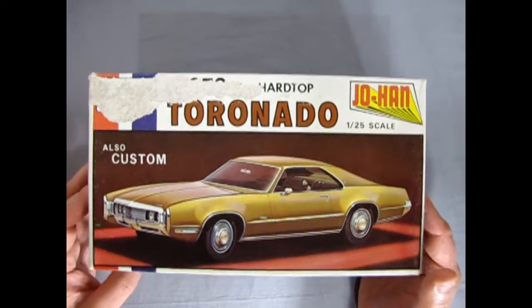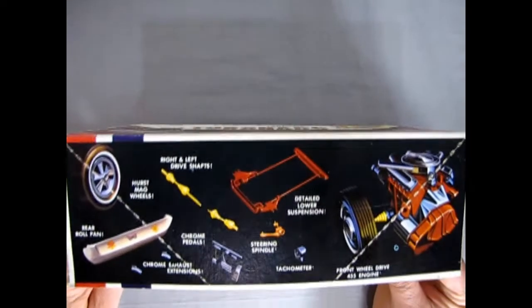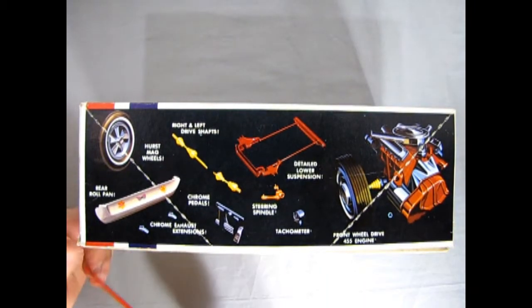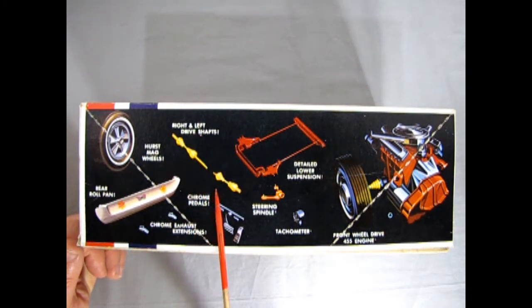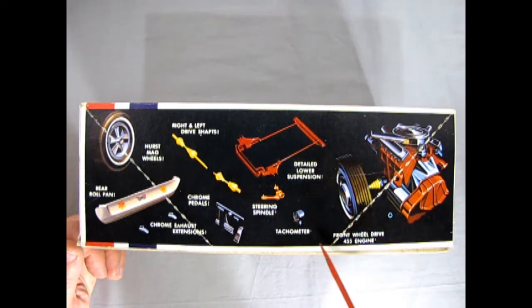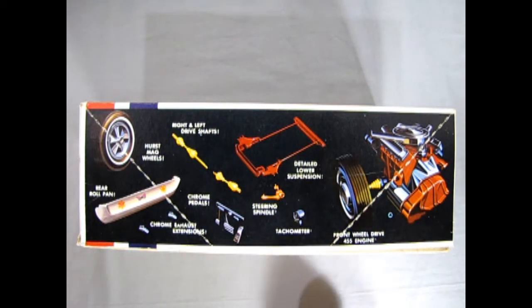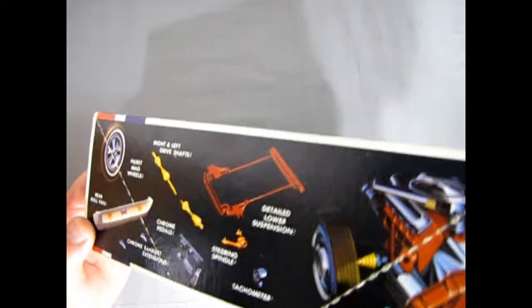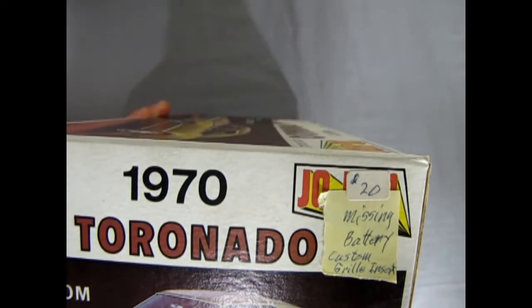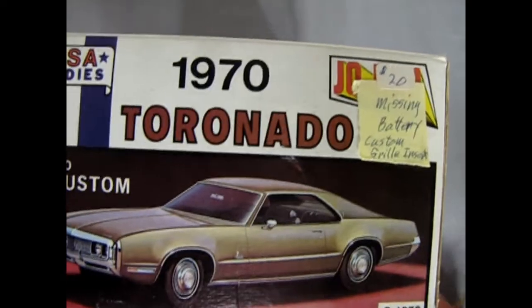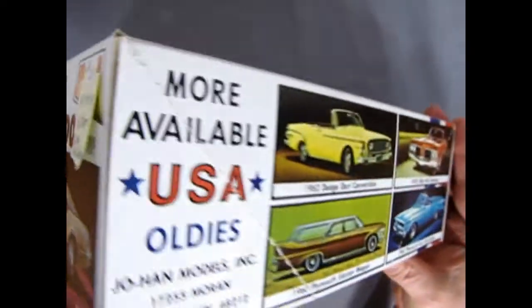Turning it up here we can see all the groovy details: we have Hurst mag wheels in here, a rear rolled pan, chrome exhaust extensions, chrome pedals, right and left drive shafts, detail lower suspension, steering spindle, tachometer, front wheel drive 455 Oldsmobile big block. If this is anything like the Johan Eldorado kit, it'll also be pretty cool. We have a little notation here: missing battery, custom grille insert. I know there's a few other little pieces missing on it.